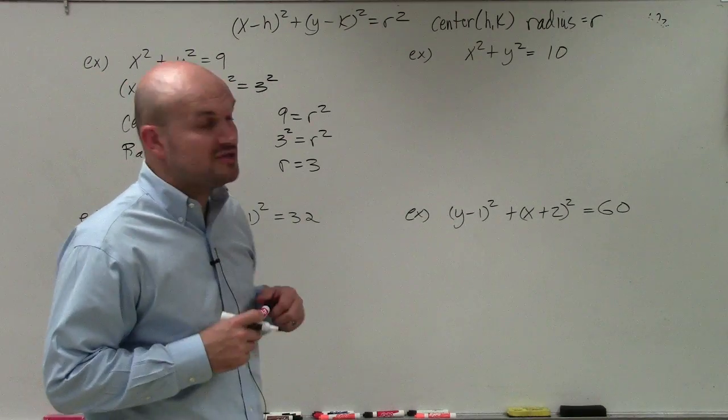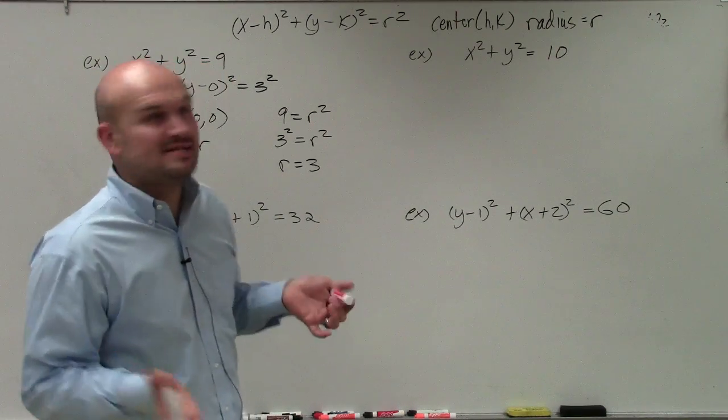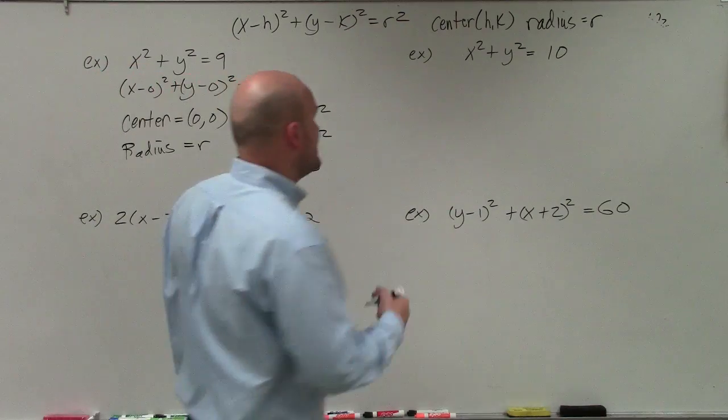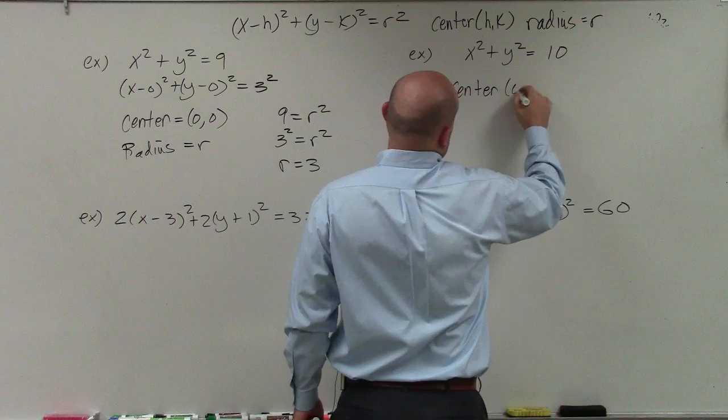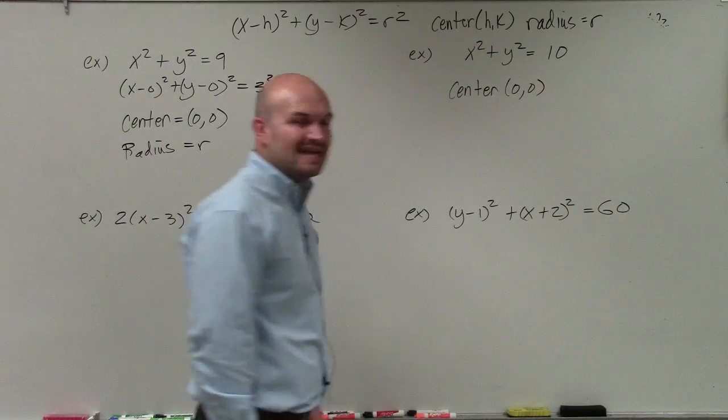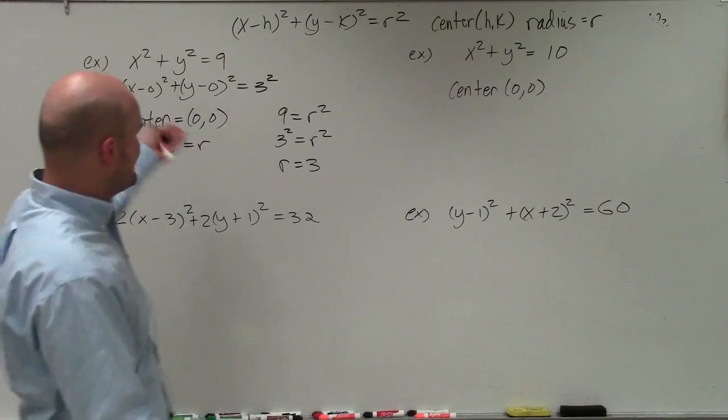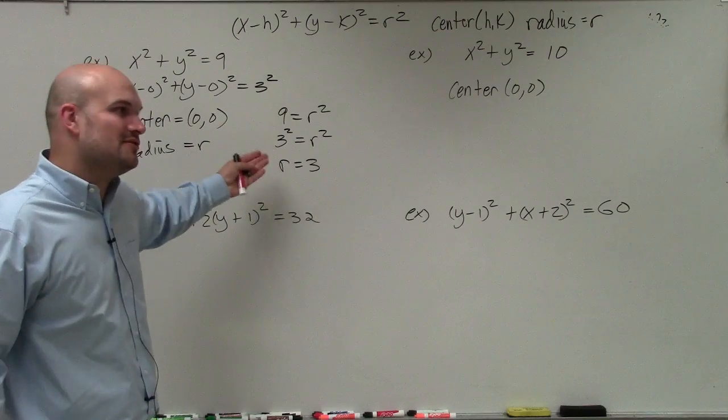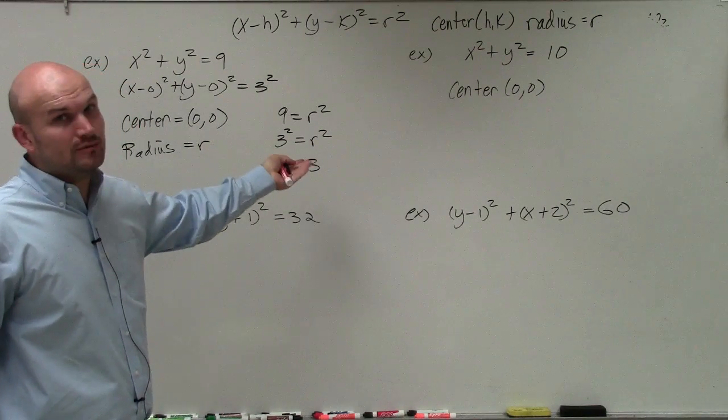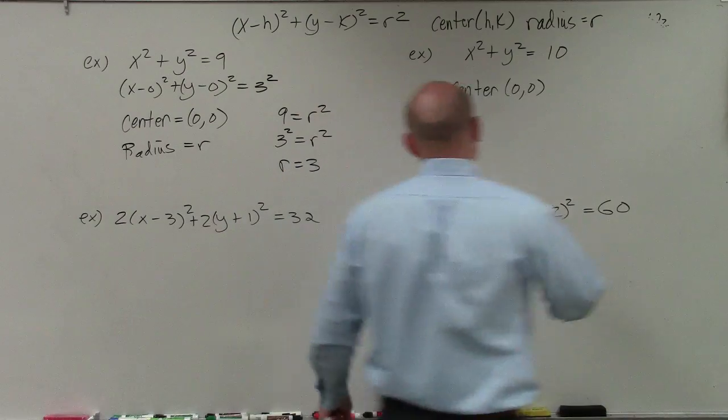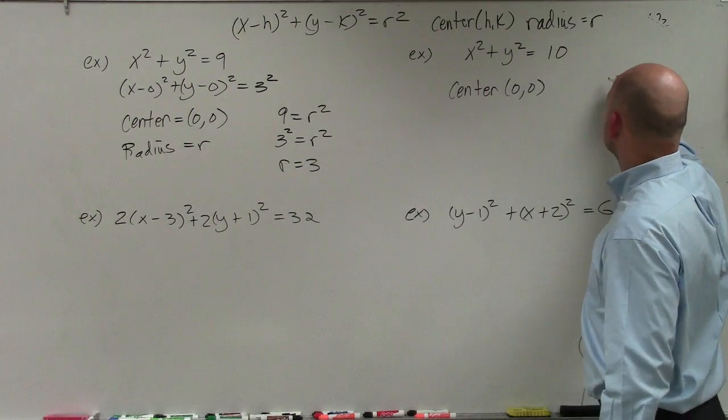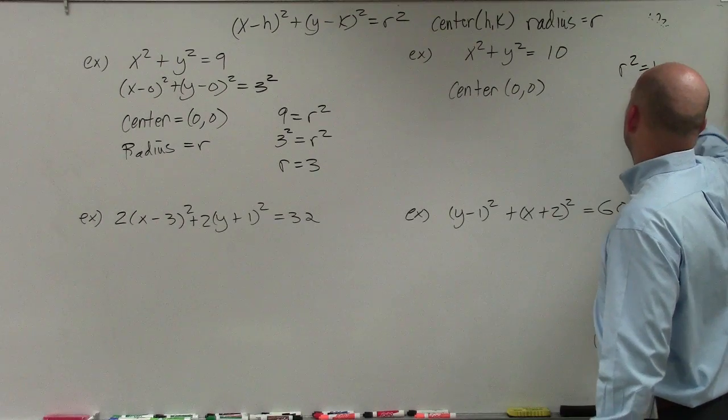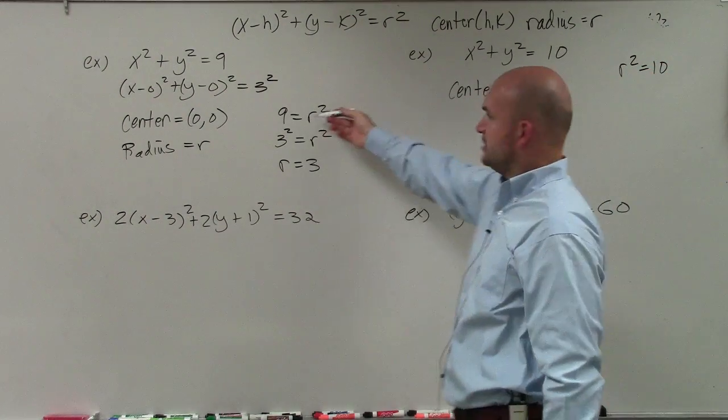In the next example, I have x squared plus y squared equals 10. Again, there's no h or k, so we know the center is going to be 0, 0. However, 10 is not a square number. So what I'm going to do now is write an equation: r squared is equal to 10.